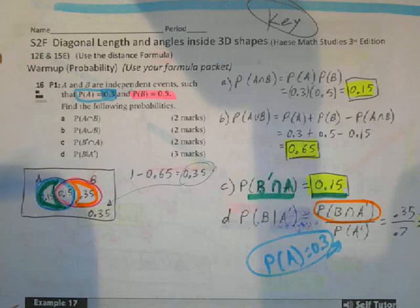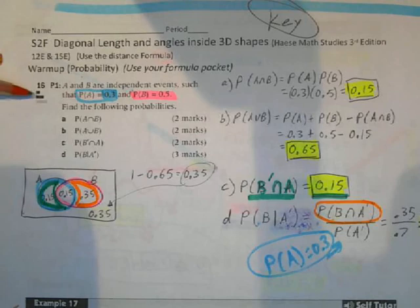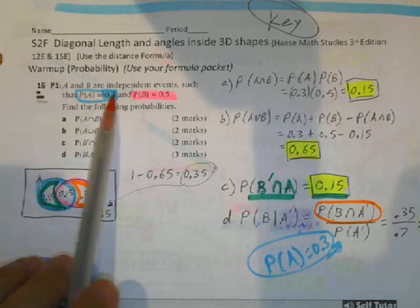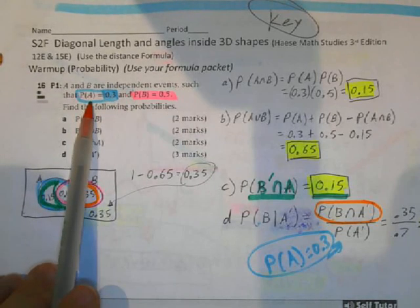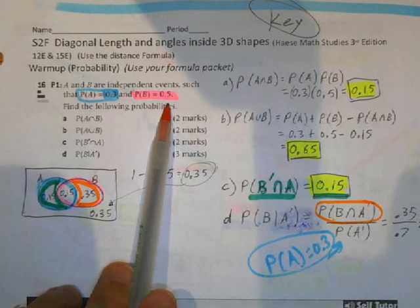All right, so I'm going to start off with the warm-up on this handout. A and B are independent events, such that probability of A is 0.3, probability of B is 0.5.